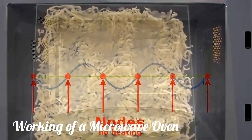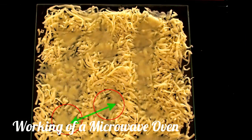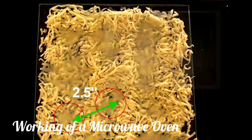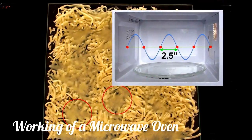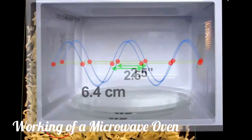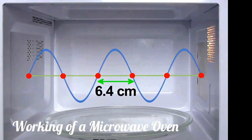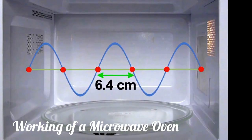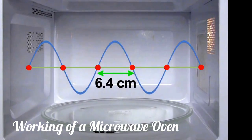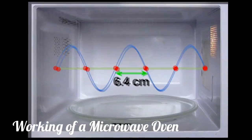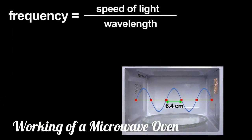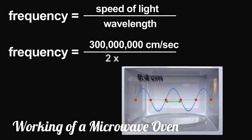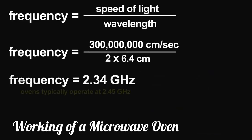If I measure the distance between melted cheese spots, I find about two and a half inches. That would be half the wavelength — the distance between nodes — and is pretty close to the actual wavelength of microwave radiation used. Using that wavelength, I can estimate the microwave radiation's frequency. The frequency is related to the wavelength by the speed of light. I get an answer that only has a four or five percent error. Not bad for this primitive measurement.